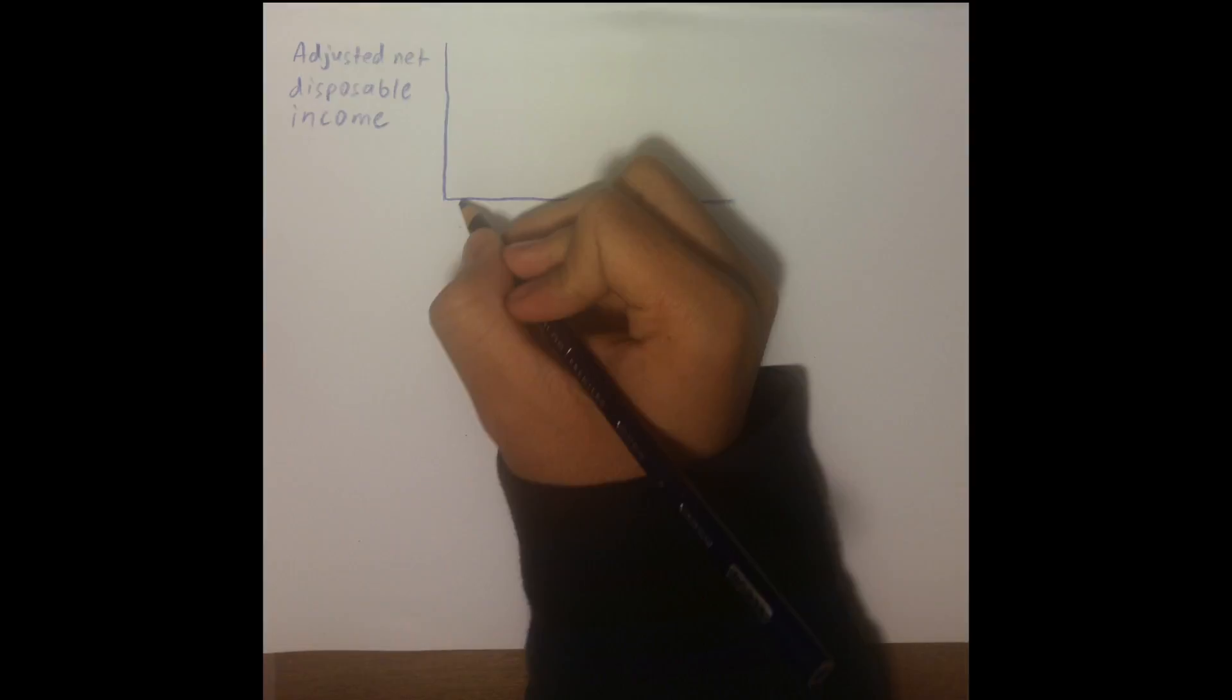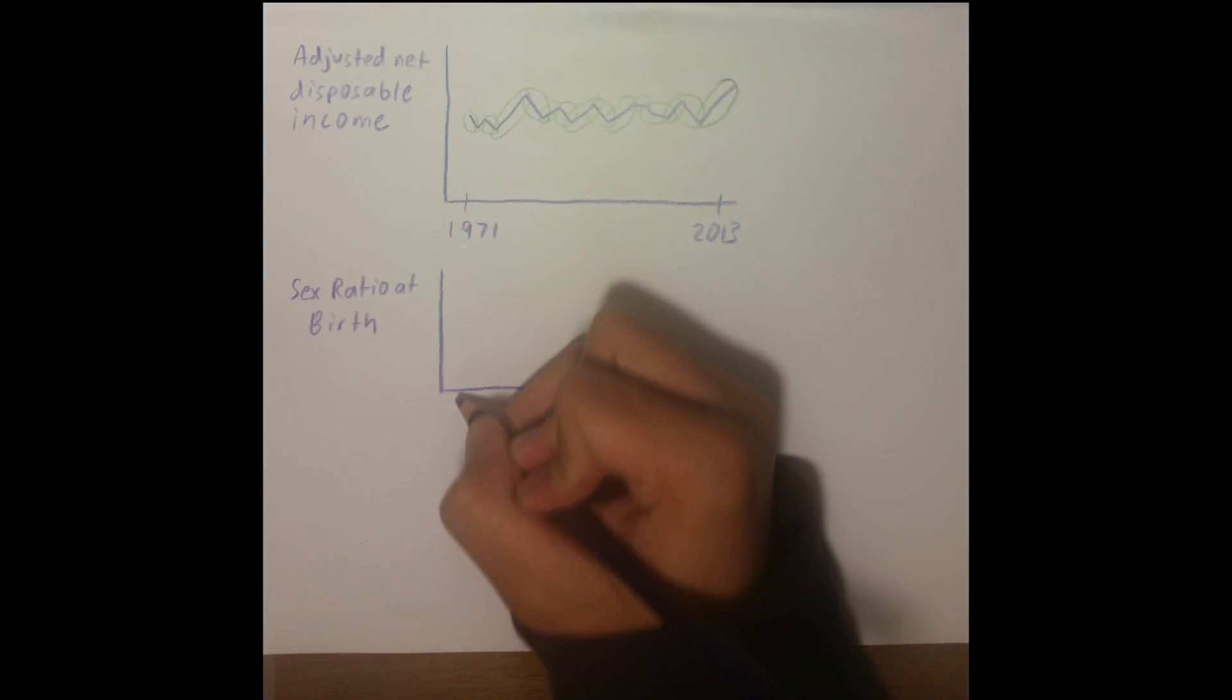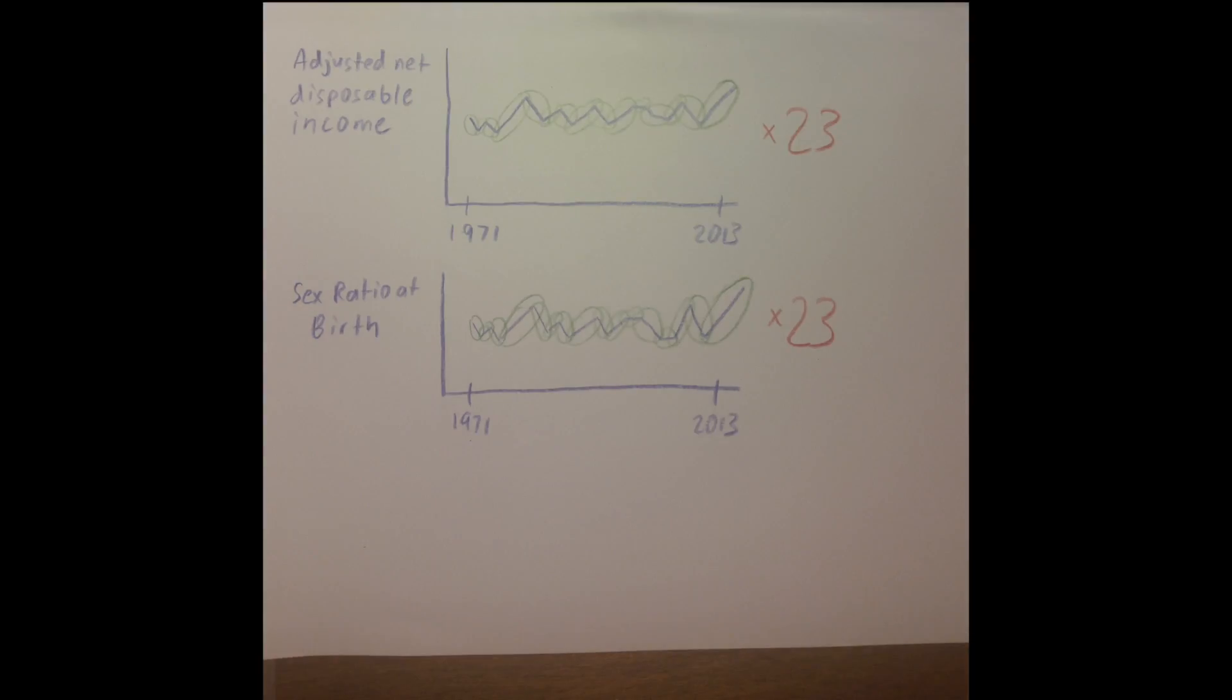One study looked at this at a macro level. That is, rather than looking at individual pregnancies or families, it looked at adjusted net disposable income and sex ratio at birth for 23 countries from 1971 through 2013.